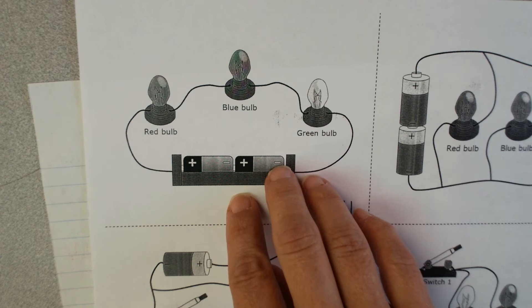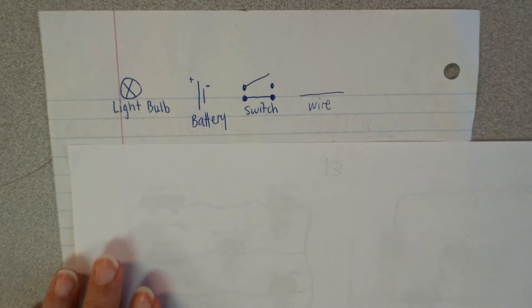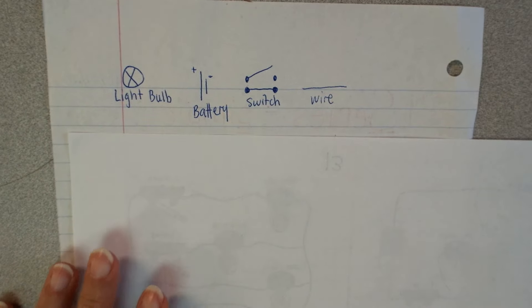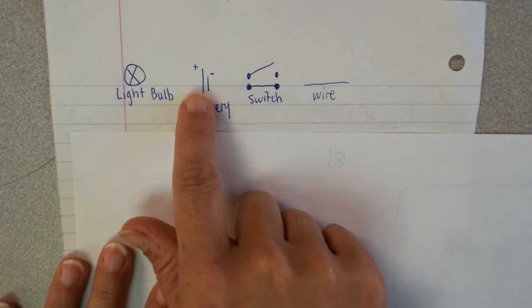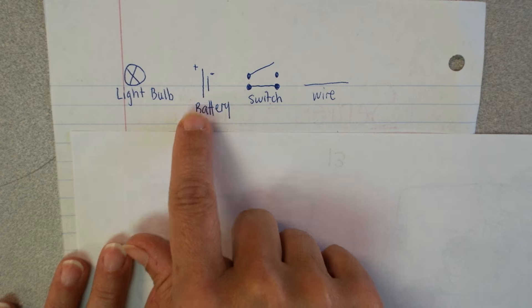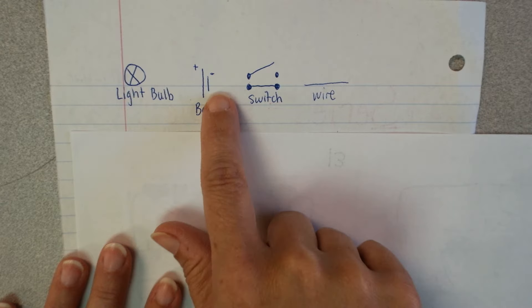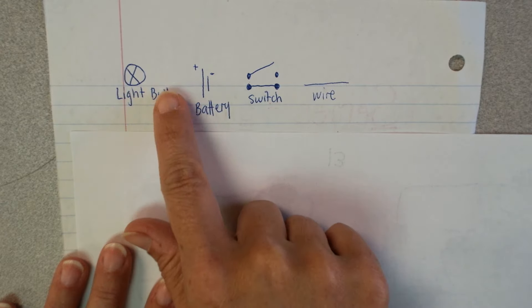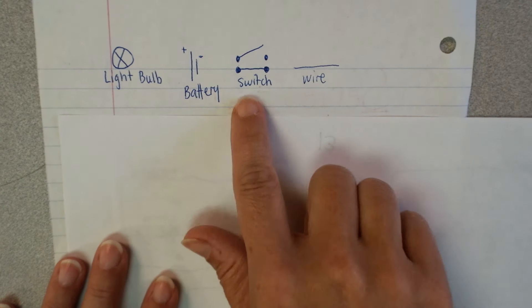But these are not actual symbols for circuits. When you get into higher grade levels, you're actually going to see different symbols. So a light bulb will be represented with a circle with an X in it. Battery is a really cool symbol. It's a long line and a short line. And so this is representing the positive terminal and the negative terminal of the battery. And remember, electricity always flows from the negative to the positive.